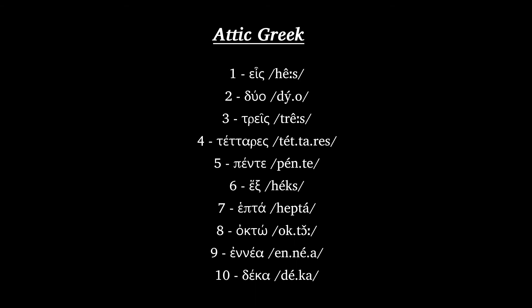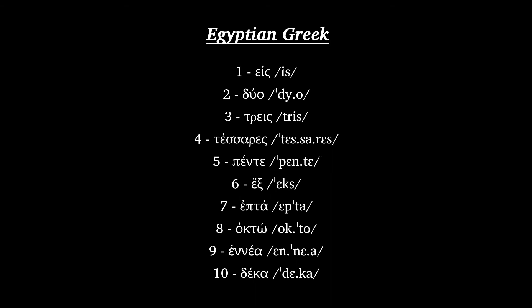Egyptian Greek: Heis, Duo, Tris, Tessares, Pente, Hex, Hepta, Okto, Enea, Deka.